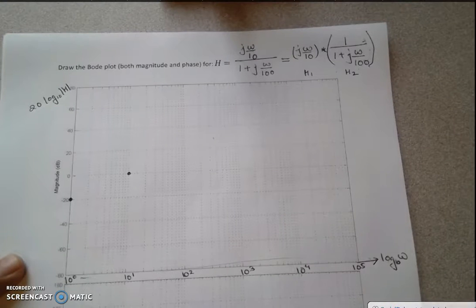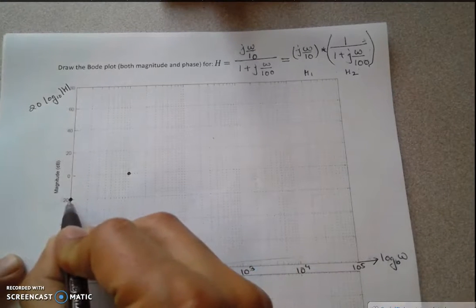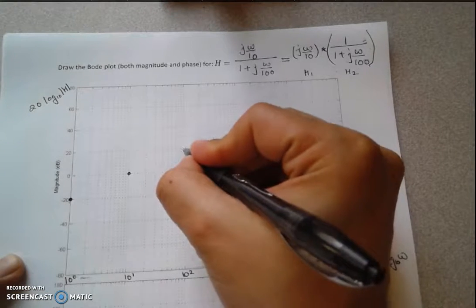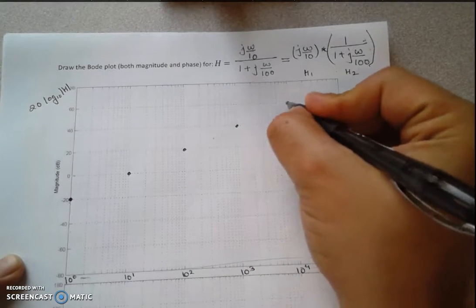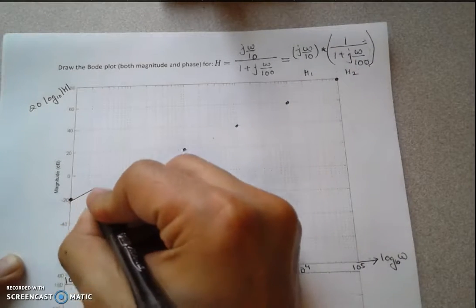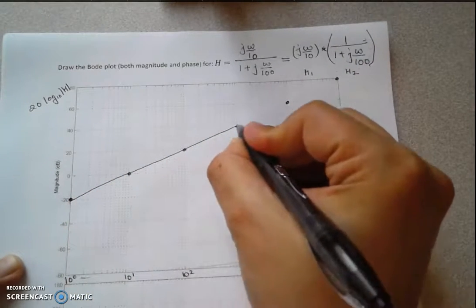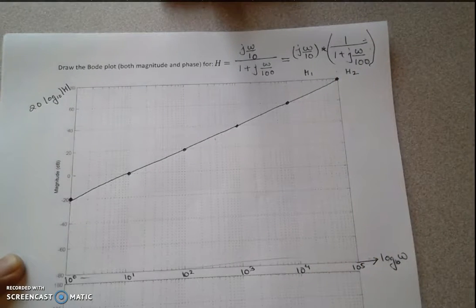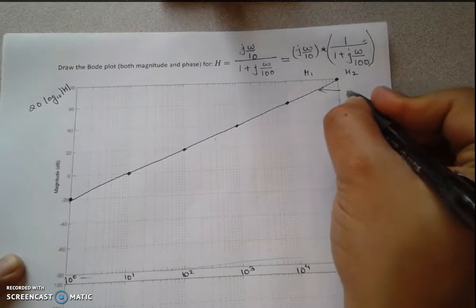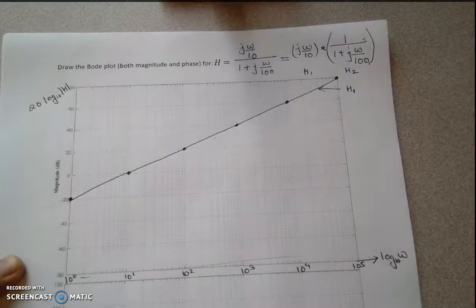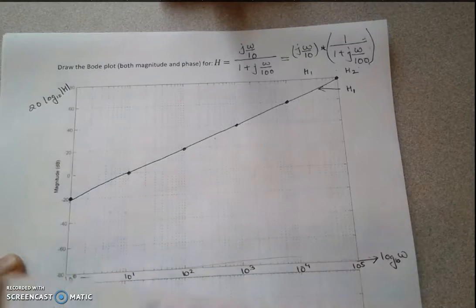So for H1, we have a straight line with a y-intercept of minus 20 dB, rising upward with a slope of 20 dB per decade. That is the magnitude plot for H1.